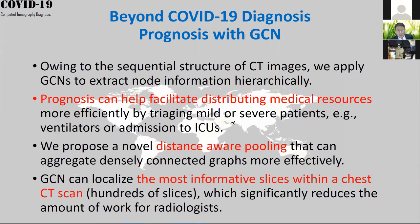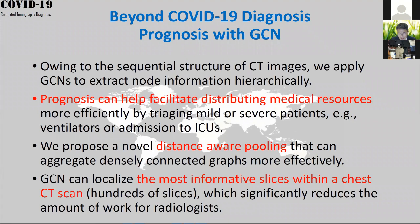Prognosis can help with distributing medical resources — for example, distinguishing mild and severe patients to better allocate ventilators or ICU admissions. For this GCN, we propose a new distance-aware pooling method to effectively aggregate densely connected graphs. We can also localize the most informative slices within a chest CT scan, reducing the radiologist's workload significantly.